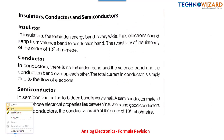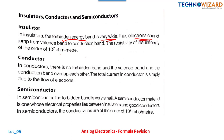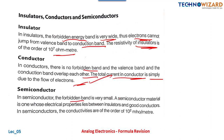Next: insulators, semiconductors, and conductors. Insulators do not conduct current — the forbidden energy gap is very wide, so electrons cannot jump from the valence band to the conduction band. Resistivity is on the order of 10⁷ ohm-meters. In conductors, there is no forbidden band — the valence band and conduction band overlap each other, so total current is simply due to the flow of electrons.